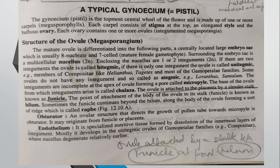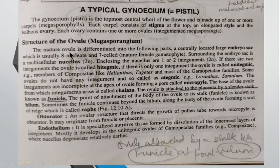We can call the ovule an integument megasporangium because the megasporangium, or we can say the ovule, is covered by the integuments. So it is known as the integument megasporangium. If we talk about the immature or early stage, at that time the ovule is a multicellular tissue known as the nucellus.